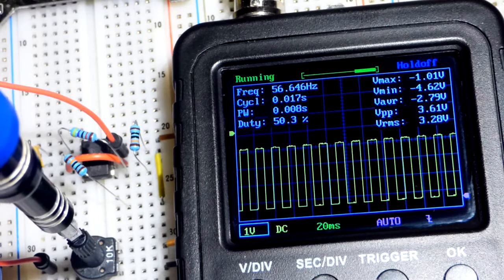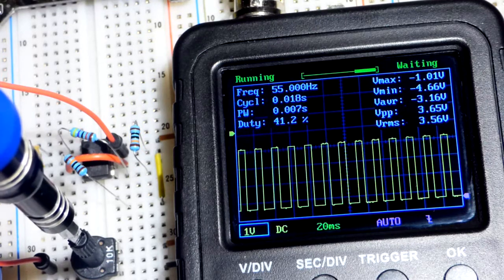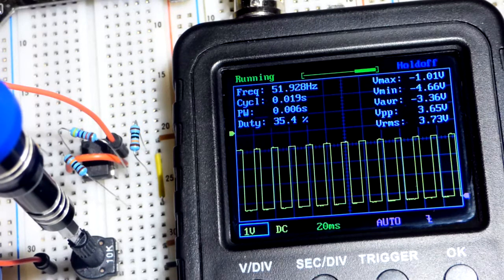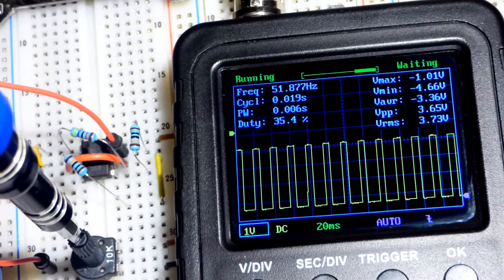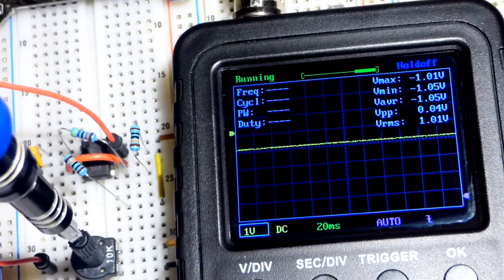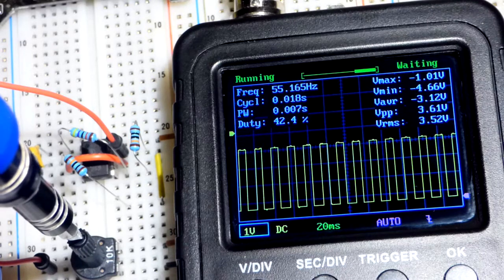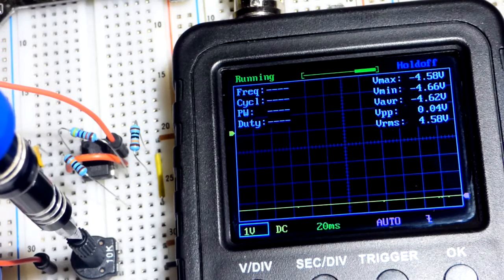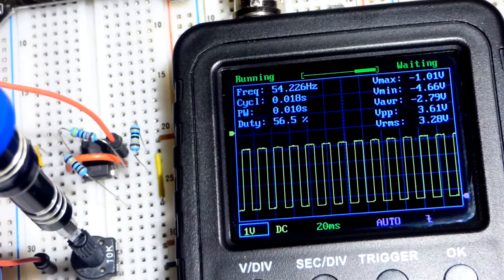Now if you go too far, if you go lower, of course the duty is less. Then it is high for a shorter period of time than it is low. But if you go too far it flat lines like that, and you go too far the other way, again it flat lines just like that.